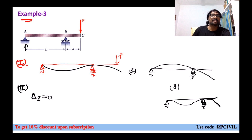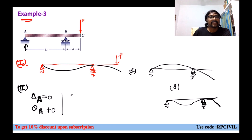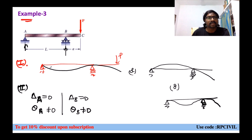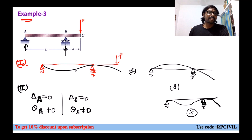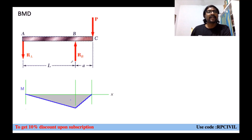At B, which is a roller support, vertical reaction is there so delta B is obviously zero. Moment reaction is not there so theta B is not zero. Checking the possibilities: the first and second curves both satisfy delta A = 0, delta B = 0, theta A ≠ 0, theta B ≠ 0. The third curve shows theta A = 0 and theta B = 0 which is incorrect. So among the first and second diagrams only, we determine correctness from the bending moment diagram.